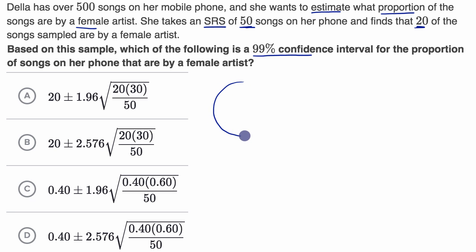Della has a library of 500 songs, and she's trying to figure out the proportion that are sung by a female artist. She doesn't have the time to go through all 500 songs to figure out the true population proportion P, so instead she takes a sample of 50 songs, N is equal to 50.